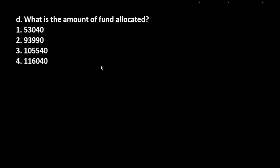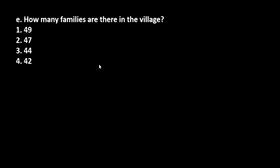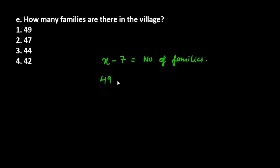Now moving to Part E: how many families are there in the village? We found that the quotient was x - 7, representing the number of families. We found x = 49, so 49 - 7 = 42. The answer is 42 families, which is the answer for Part E.